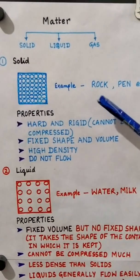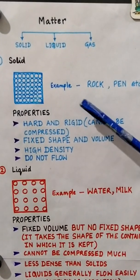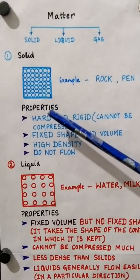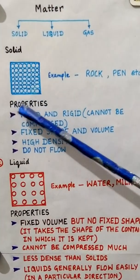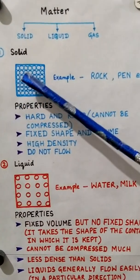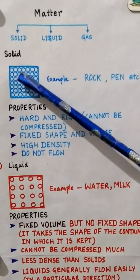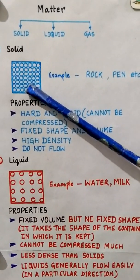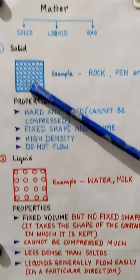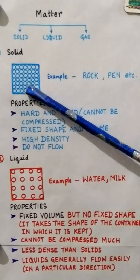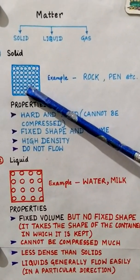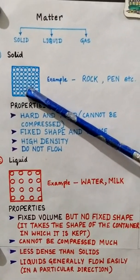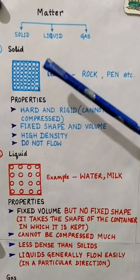Examples of solid can be rock, pen, stone, stick, and any other thing. As you can see in the diagram I have drawn for you, the particles are closely packed to each other and so the particles have a strong force of attraction between them, which is the reason for the below-mentioned properties of solids.